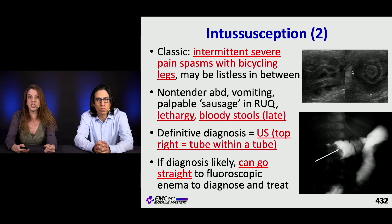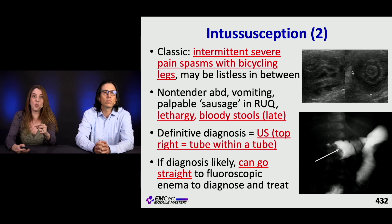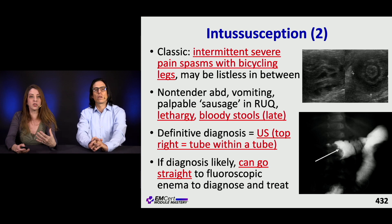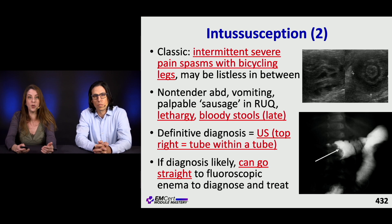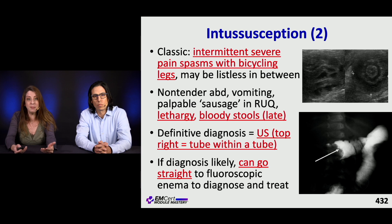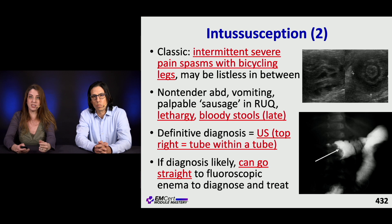For definitive diagnosis of intussusception, ultrasound can show the double wall sign. If the diagnosis is likely — say they've had this before — you can go straight to fluoroscopic enema, which can both diagnose and treat these patients.